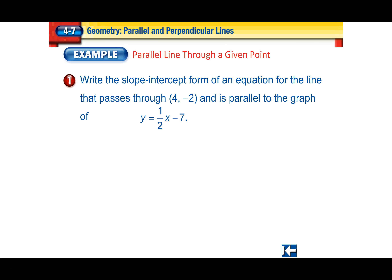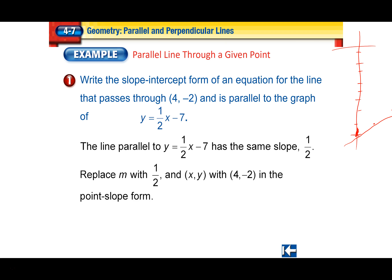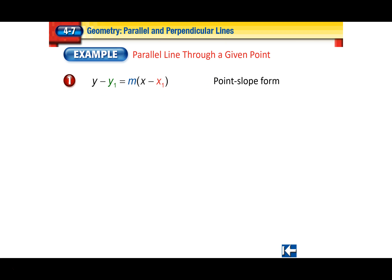Parallel lines with given points. Write in slope-intercept form an equation for the line that passes through a given point and is parallel to the graph of a given line. A line parallel to another has the same slope, so we steal the slope from the equation and take the point they gave us. We want slope-intercept form, so we use point-slope form because we have a point and a slope.